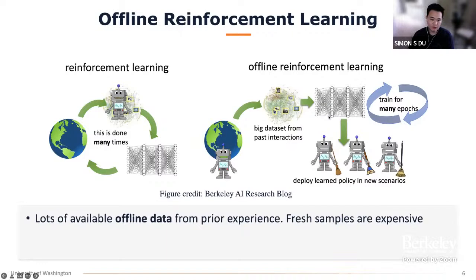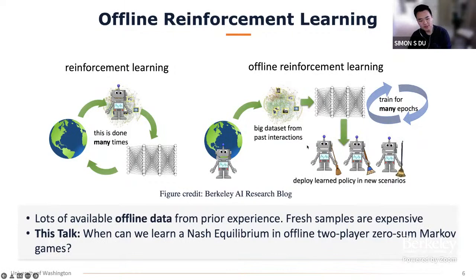The motivation for offline reinforcement learning is that in many settings and applications, online interaction with the environment can be very costly, so we really want to use existing data to learn a good policy. This talk will focus on learning a Nash equilibrium in this offline two-player zero-sum Markov game setting, and we will focus on what conditions we need in order to learn a Nash equilibrium.